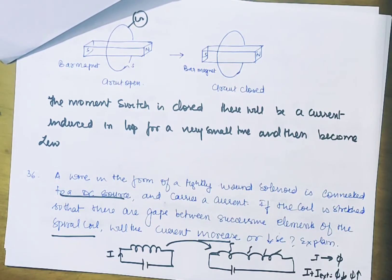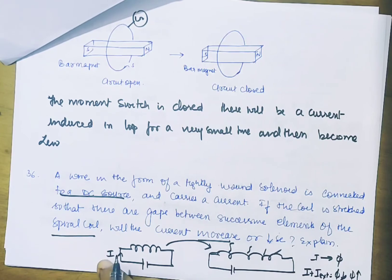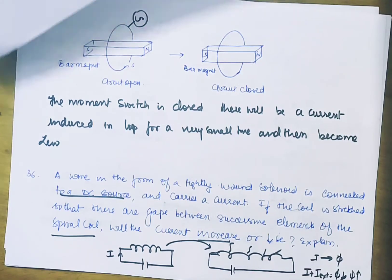Since the flux is proportional to the current I from the battery, to increase the flux we can add induced current. So the induced current will add to our source current, and thus this will increase the current in the circuit.